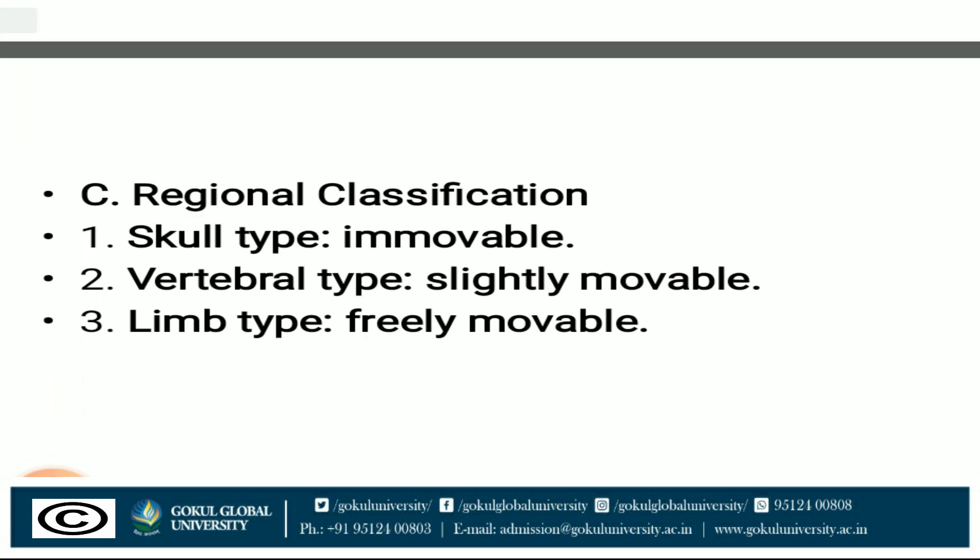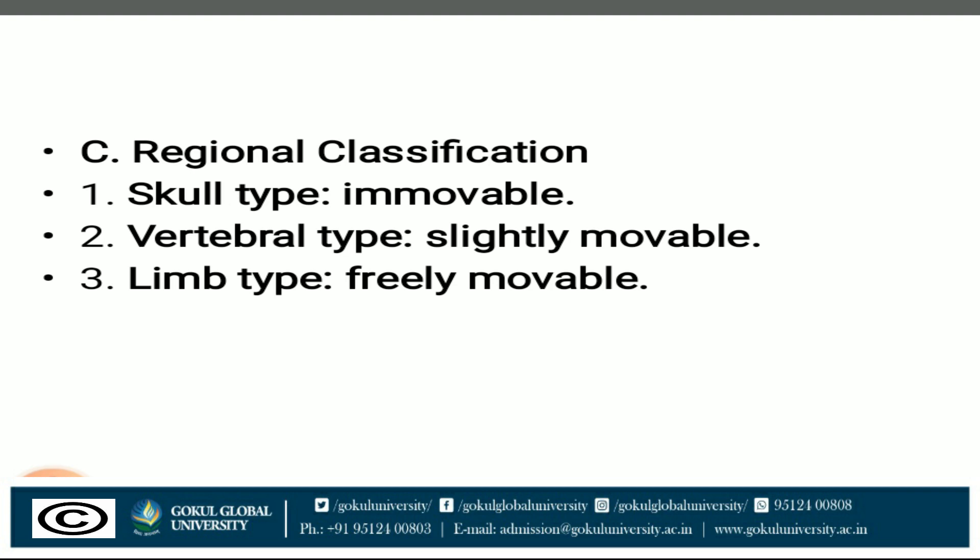For regional classification: the skull type is immovable, corresponding to synarthrosis. The vertebral type is slightly movable, corresponding to amphiarthrosis. The limb type is freely movable, corresponding to diarthrosis.